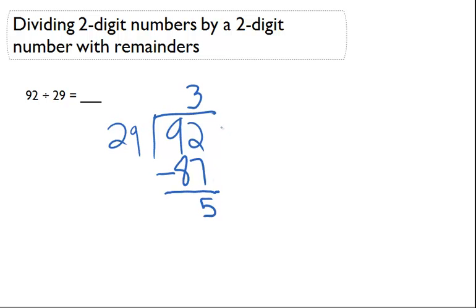Since we have no other number that I can bring down to divide here, 29 can't go into 5. That must mean that's a remainder.